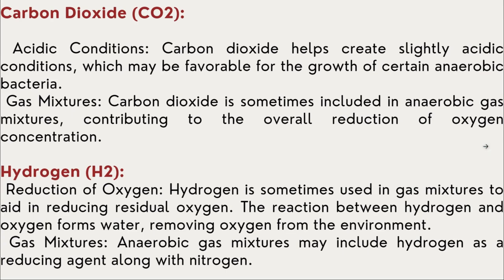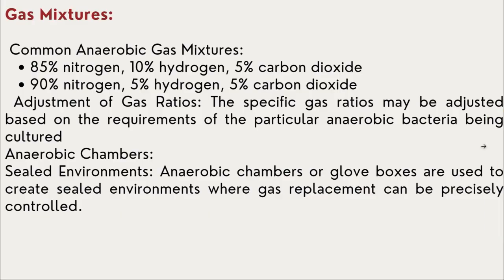Carbon dioxide: carbon dioxide helps create slightly acidic conditions which may be favorable for the growth of certain anaerobic bacteria. The carbon dioxide in the gas mixture has always been beneficial in order to grow anaerobic microorganisms along with hydrogen. Some of the common anaerobic gas mixtures are: 85% nitrogen, 10% hydrogen, 5% carbon dioxide; or 90% nitrogen, 5% hydrogen, and 5% carbon dioxide. These mixtures are used to reduce or remove oxygen completely so that it can favor the growth of anaerobic bacteria.